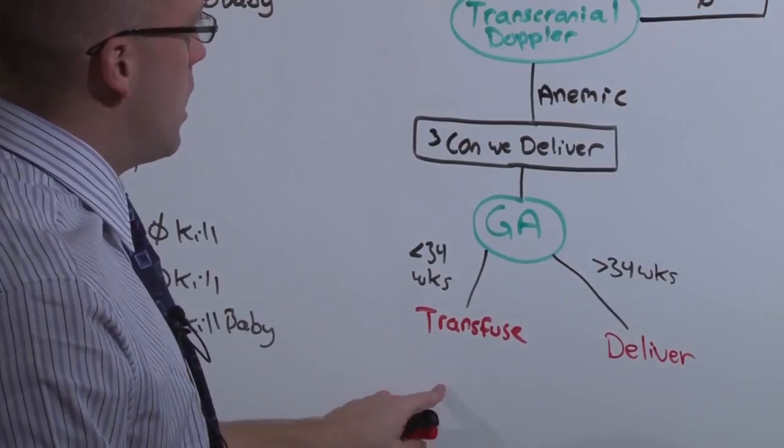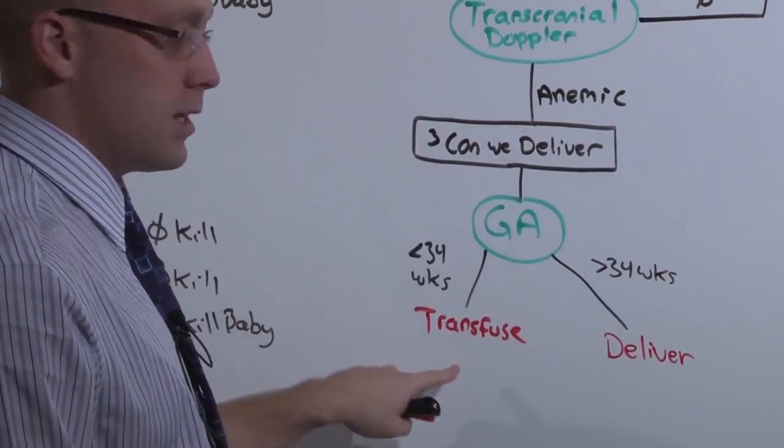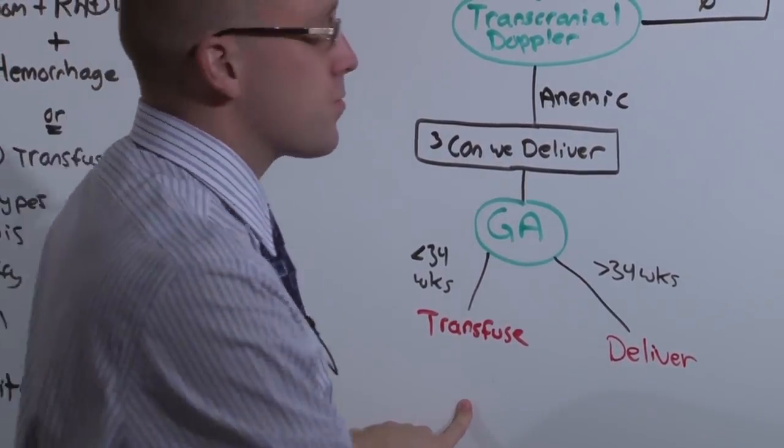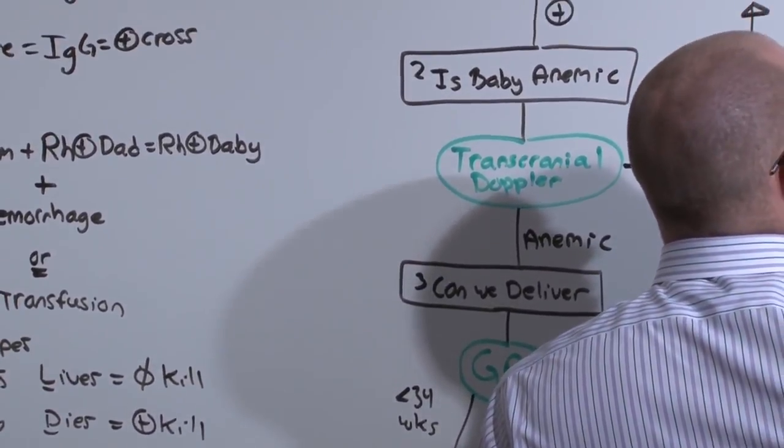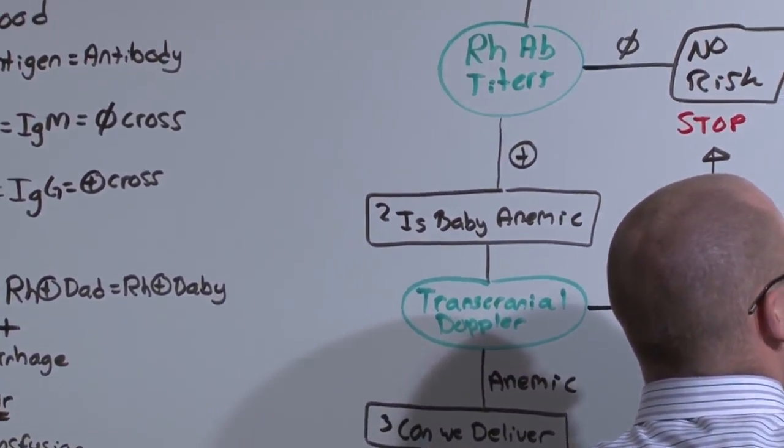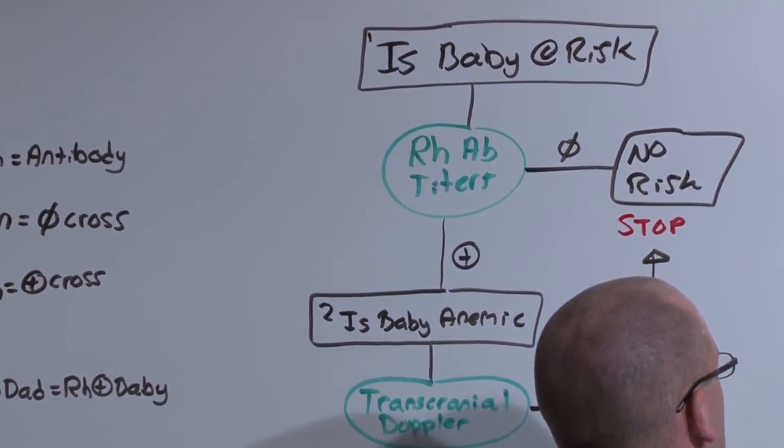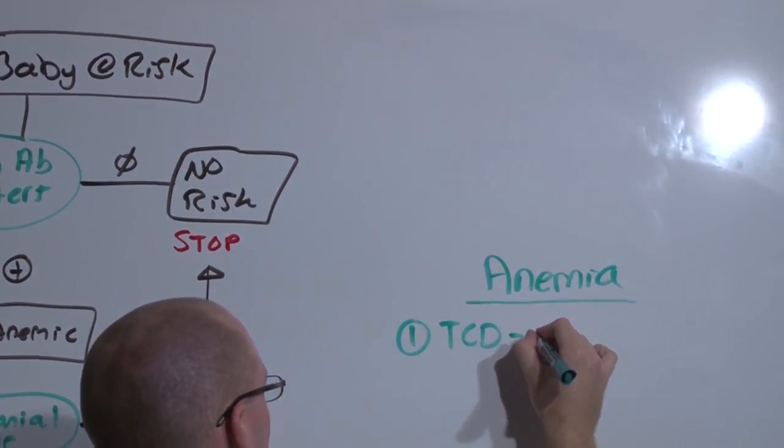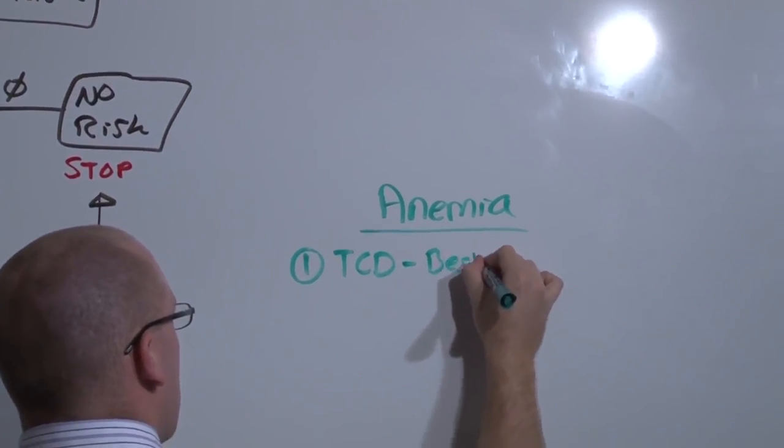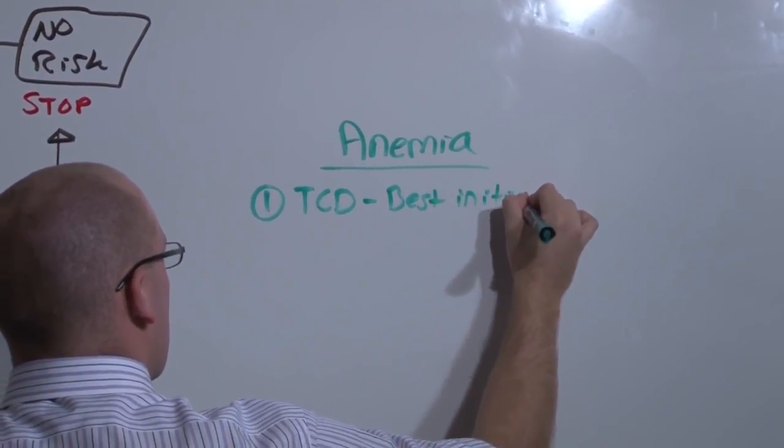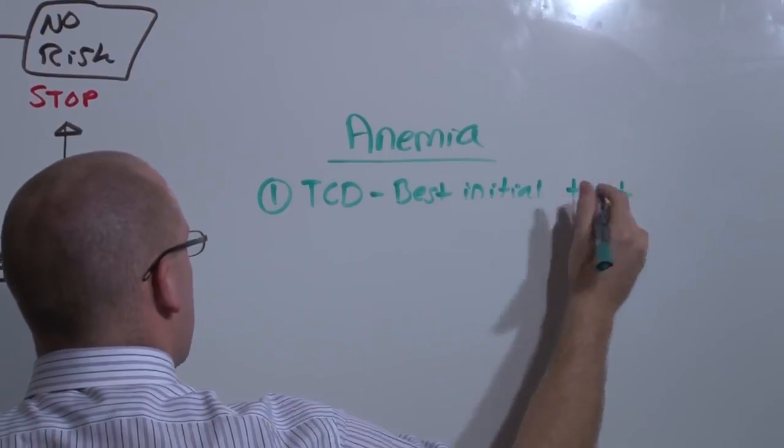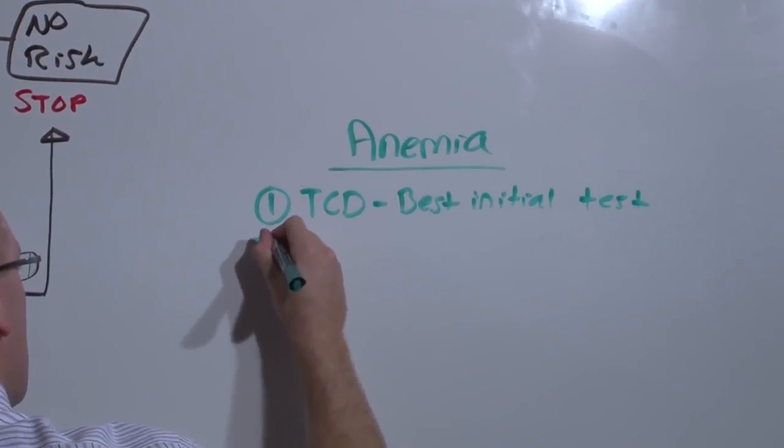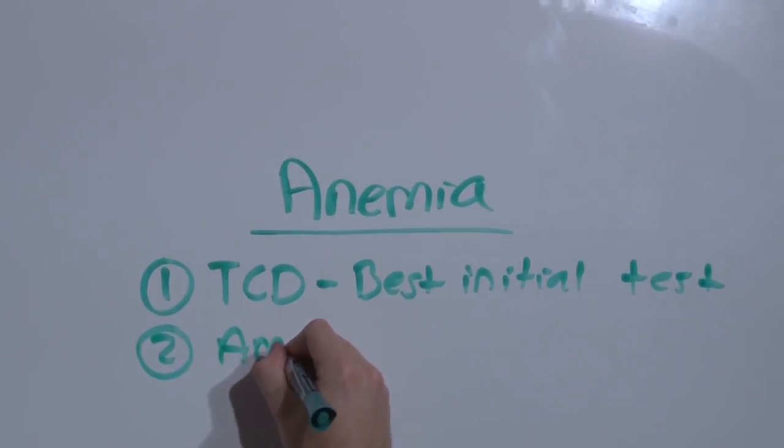How do you transfuse? Let's talk about first the other modalities of assessing anemia and then get to how you do the transfusion. In order to diagnose fetal anemia, the diagnostic modality of choice is the transcranial Doppler, non-invasive, very sensitive.